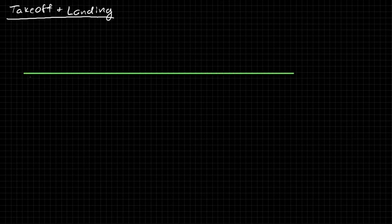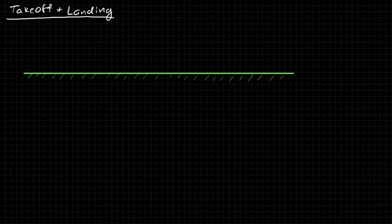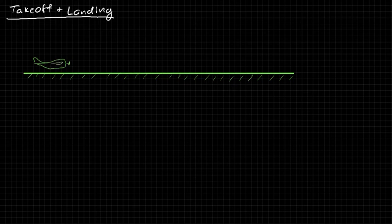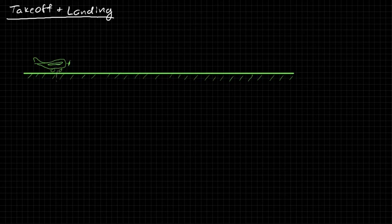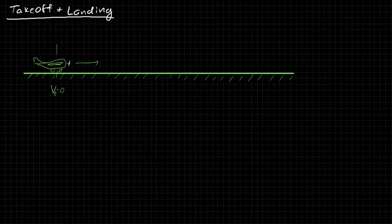Let's talk about takeoff. We're on an airstrip — solid ground, as you'd hope. There are a few different phases to consider. The aircraft starts from zero velocity and begins accelerating, so the velocity starts increasing.